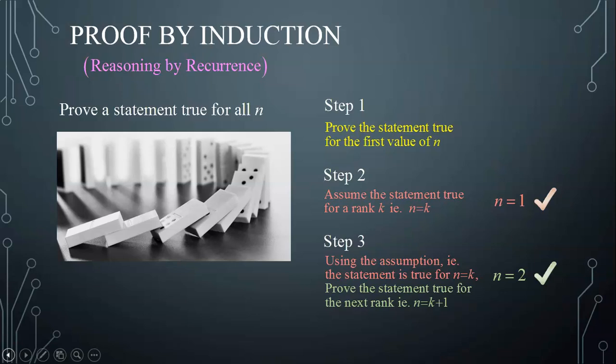Again, knowing the statement true for n equals to 2, according to step 3, the statement should be true for the next rank n equals to 3, which knocks down the third domino, and that could go on infinitely.